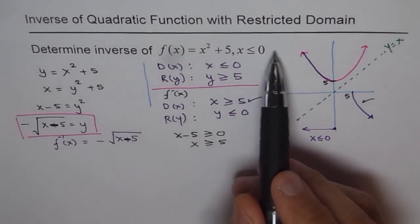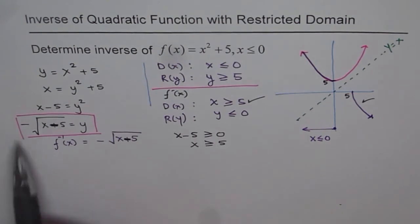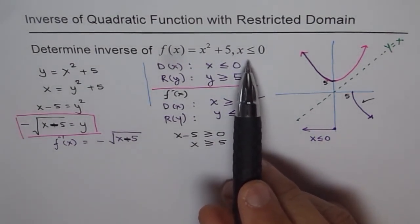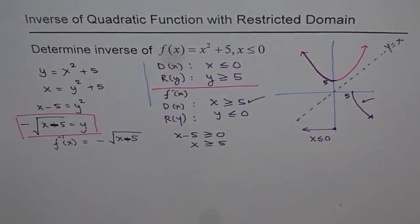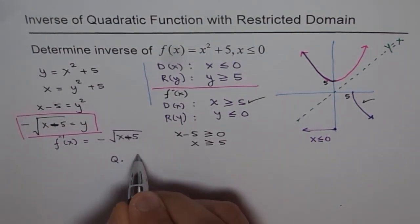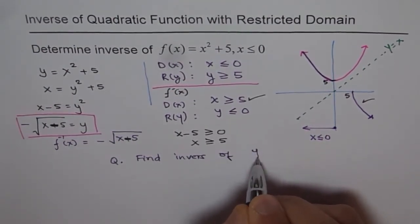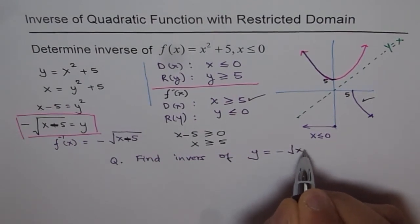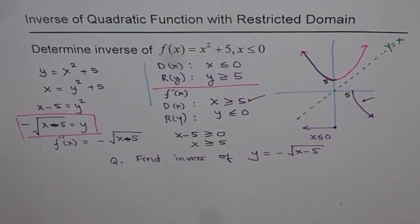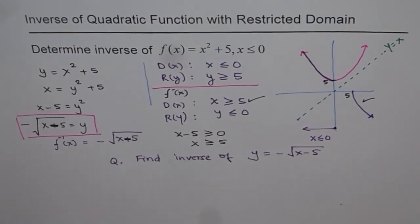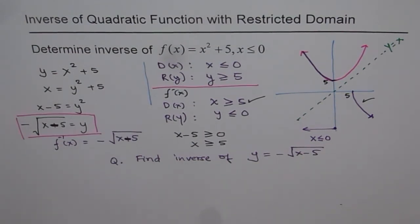Here is a practice question for you: find the inverse of y = -√(x - 5). The answer is right there, but try to work it out yourself and verify that the inverse is what it should be. That's a challenge question for you — try to do it.